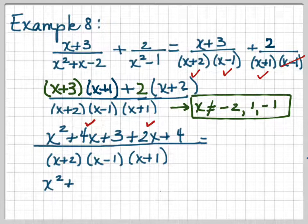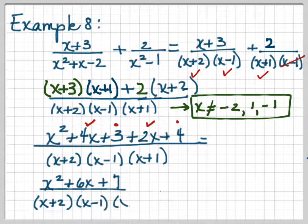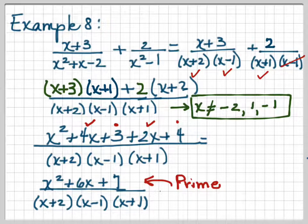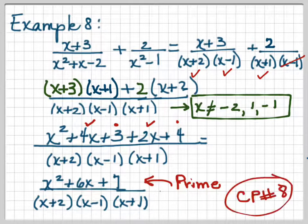When we do our multiplication: (x + 3)(x + 1) gives us x² + 4x + 3, and 2(x + 2) gives us 2x + 4. Combining: x² + (4x + 2x) + (3 + 4) = x² + 6x + 7, all over the denominator (x + 2)(x − 1)(x + 1). The numerator is prime — it doesn't factor into integer factors — so we're done. Go ahead and do checkpoint number 8.